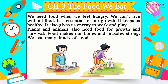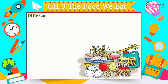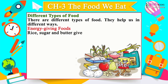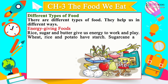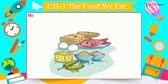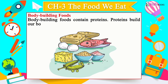Food makes our bones and muscles strong. We eat many kinds of foods like cereals, fruits and vegetables. Energy-giving foods: rice, sugar and butter give us energy. Wheat, rice and potato have starch; sugar cane and fruits have sugar; edible oils like butter, ghee and dry fruits have fat.